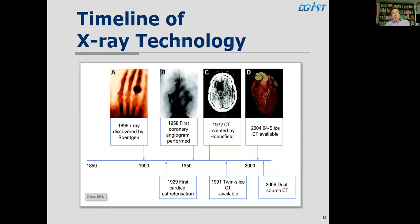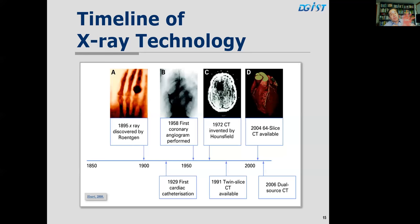This is a timeline of x-ray technology. X-rays are ionizing radiation, discovered by Wilhelm Roentgen in 1895. In 1929 was the first cardiac catheterization — inserting a small tube into blood vessels and into the heart. In 1958, the first coronary angiogram was performed, allowing visualization of the coronary arteries from the inside rather than from the outside. In the early 1970s, CT was invented by Hounsfield, combining multiple x-ray images obtained around the patient with computational algorithms — not a fundamentally new electromagnetic radiation, but a combination of computers and x-ray technology.